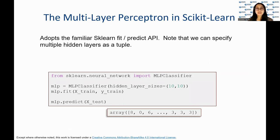This slide provides a code snippet that shows how to use feedforward neural networks from scikit-learn. The code imports MLPClassifier from sklearn.neural_network and instantiates an object MLP of MLPClassifier with two hidden layers, each with 10 neurons. Then it trains a model on x_train and y_train using the fit method and predicts the labels of x_test using the predict method.